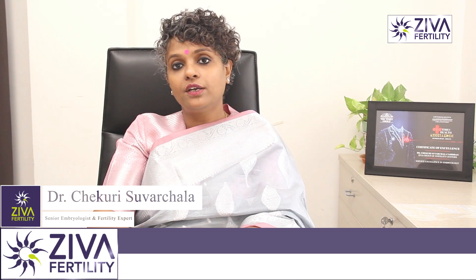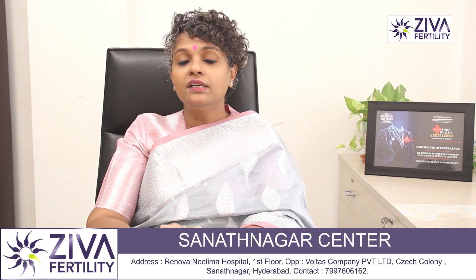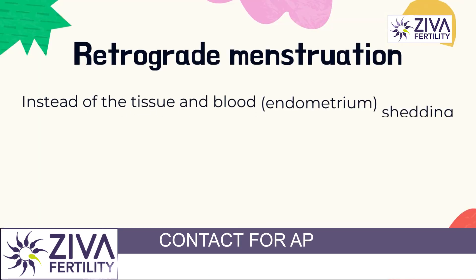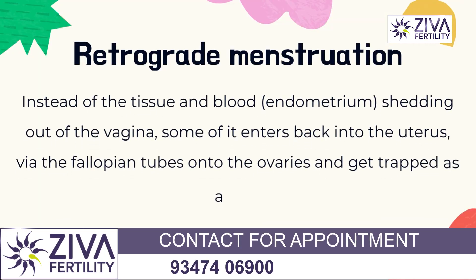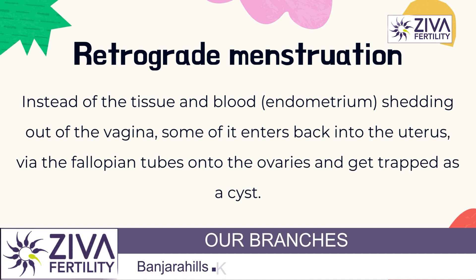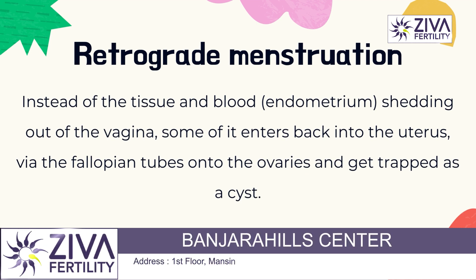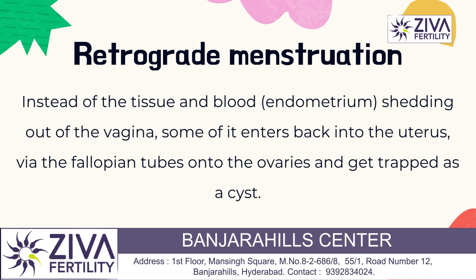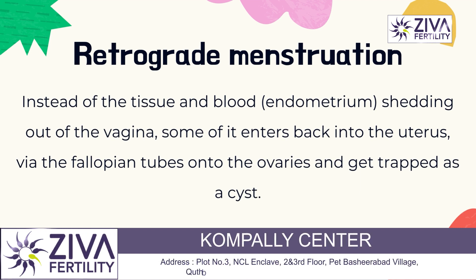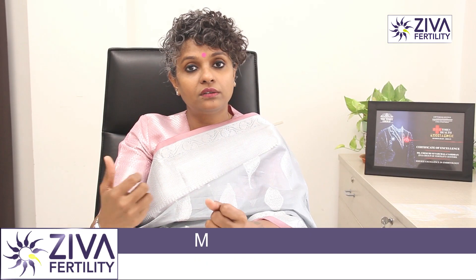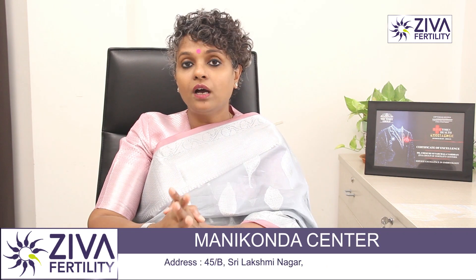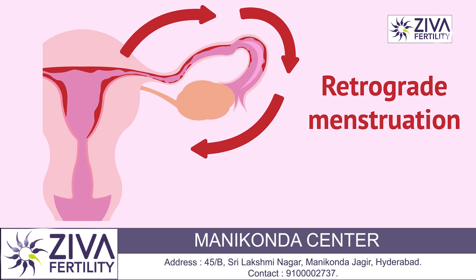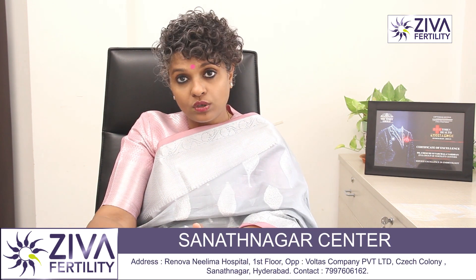Due to the presence of these endometriomas or chocolate cysts on ovaries, there is something called retrograde menstruation happening. It could be because the menstrual flow, instead of coming out of the vagina, went in the other direction and sat on the ovaries and deposited itself there, responding to every month's menstrual hormonal release and shedding as a bleed. This retrograde menstruation can occur every month and the problem could become more and more serious.